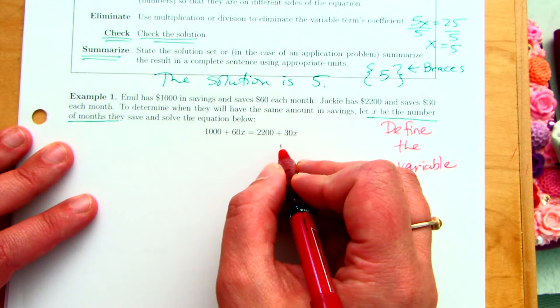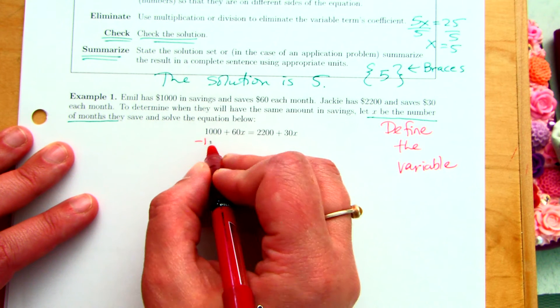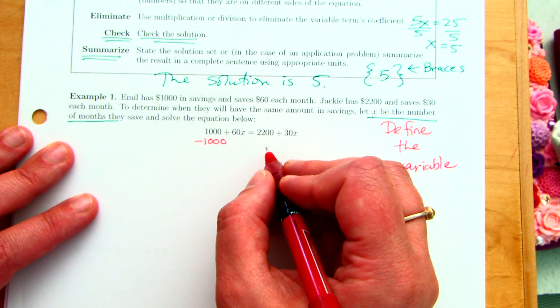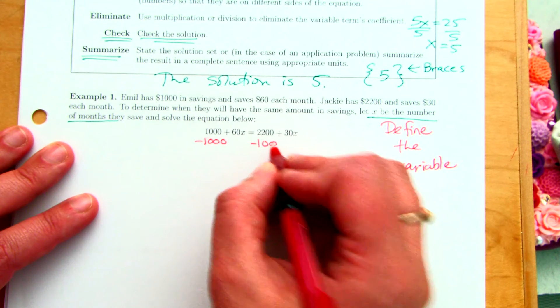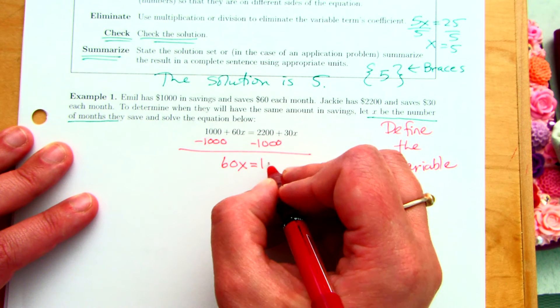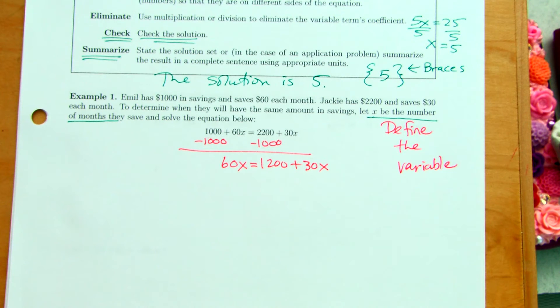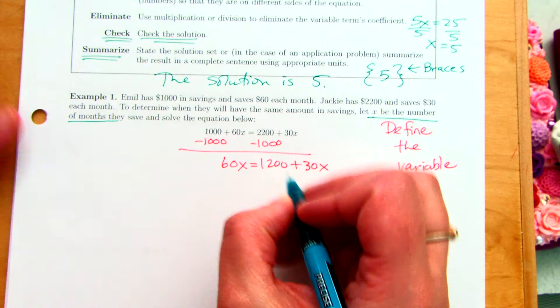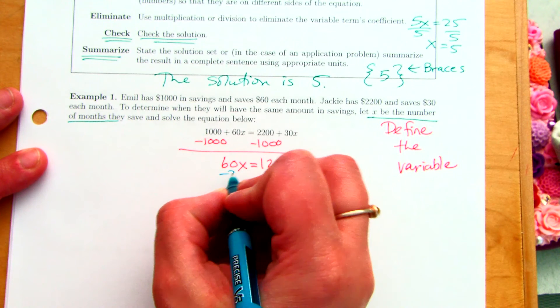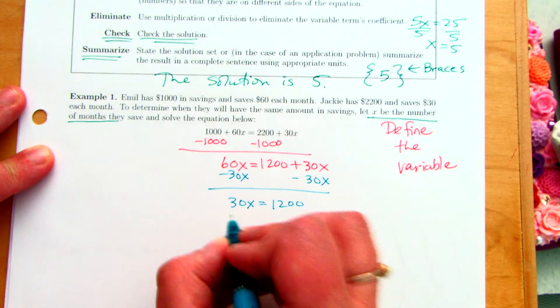Yes, Megan? When you said one, I thought you meant the 1,000. But that will work, too. So, if I subtract 1,000 from both sides, I get 60X equals 1,200 plus 30X. And now, what would I want to do? I want to get all of my variables onto the other side. I think what you were going to say next was to subtract 30X.